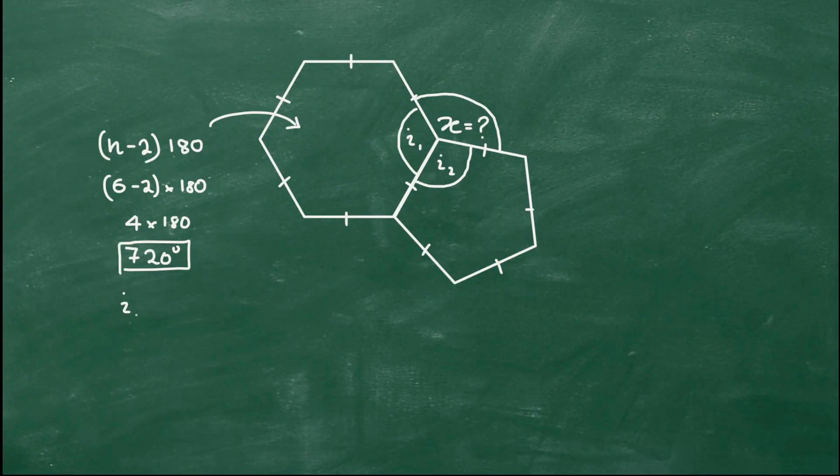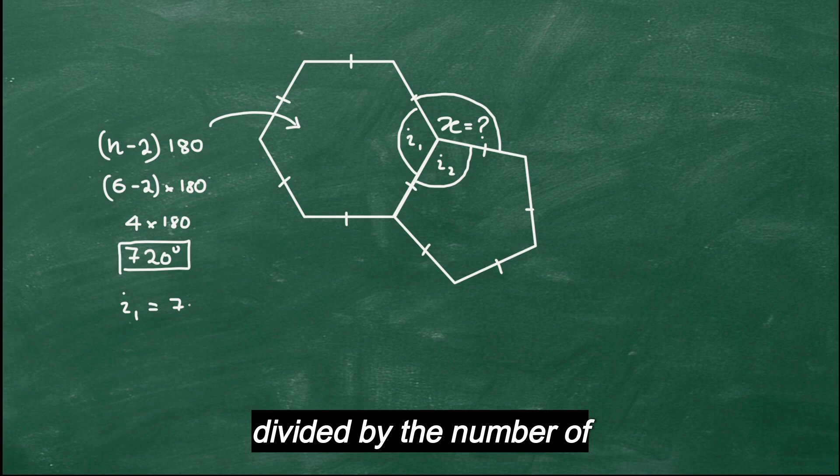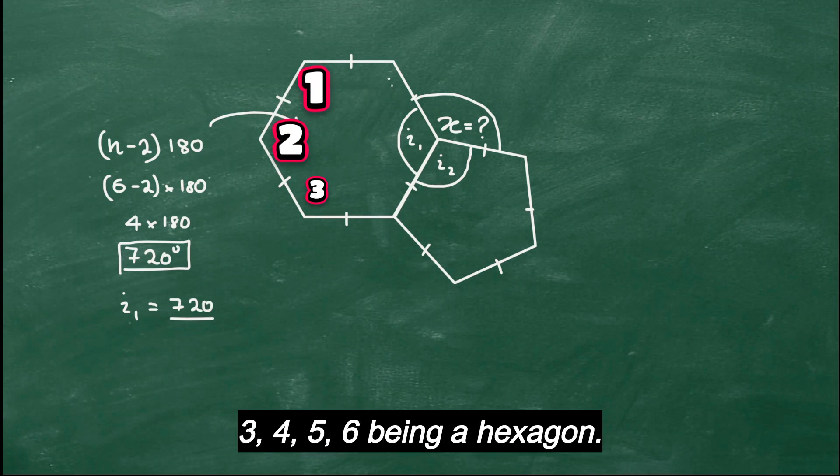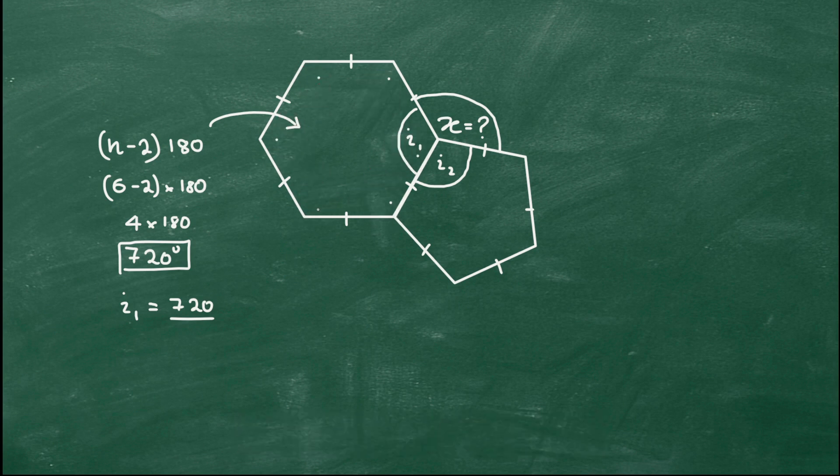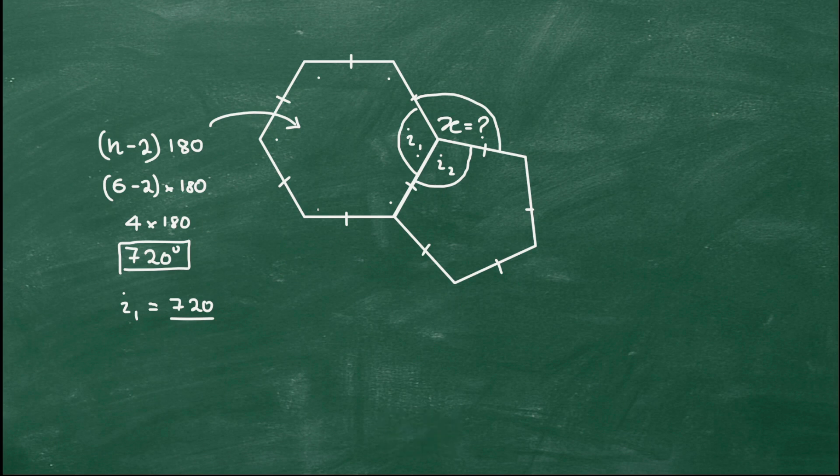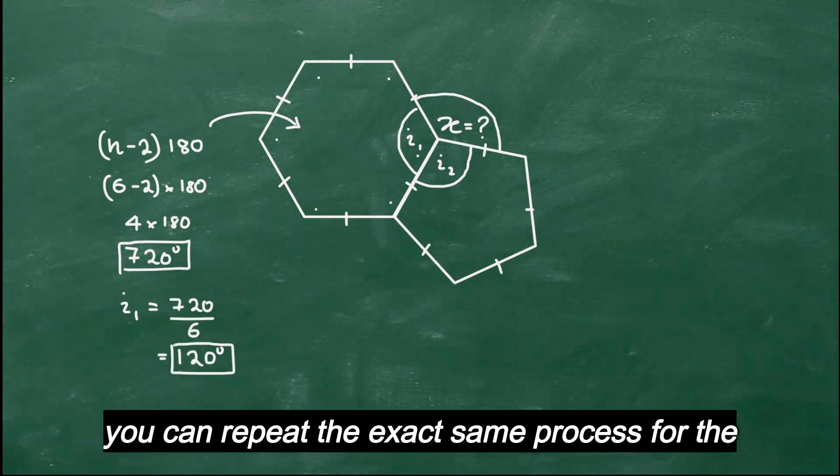Now if all of them add up to 720 degrees, what about one of them? One of them, lowercase i1, is 720 divided by the number of angles. You can see it's 1, 2, 3, 4, 5, 6, being a hexagon, so divided by 6, and you get 120 degrees.